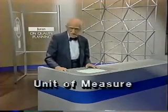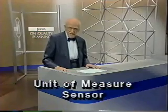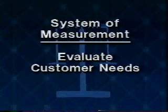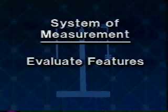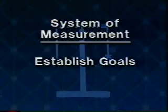To say it in numbers requires that we create a system of measurement consisting of a unit of measure and a sensor. The unit of measure permits quantification of a product feature. The sensor is a method or instrument which can carry out the evaluation and state the findings in terms of the unit of measure. We'll discuss units of measure during this session and discuss sensors during the next session. A system of measurement helps at every step of the quality planning journey: to evaluate customer needs, to evaluate product and process features, and to establish optimal product and process goals.